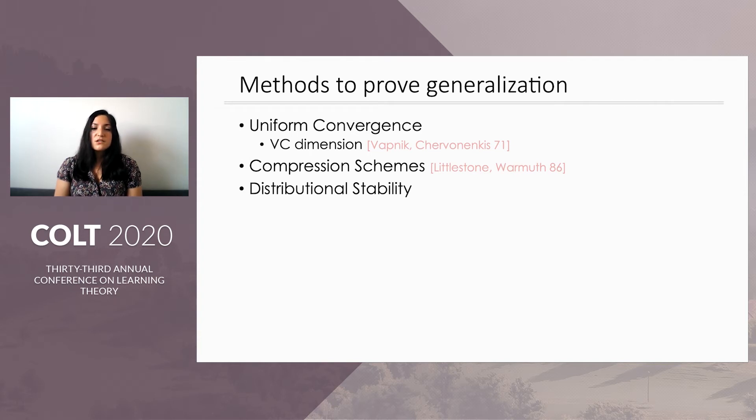Another category of conditions is distributional stability, and an important member of that category is differential privacy. Differential privacy essentially asks that a small change in the input of the algorithm does not change the distribution over the outputs of the algorithm too much.